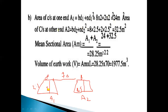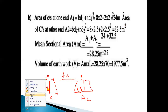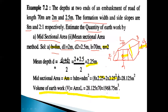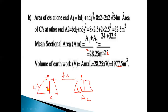Mean sectional area = (A1 + A2) / 2 = (24 + 32.5) / 2 = 28.25 square meters. Therefore, volume of earthwork = mean area × L = 28.25 × 70 = 1977.5 cubic meters.